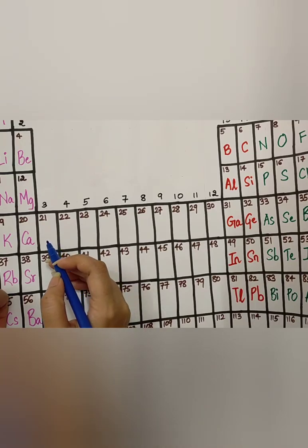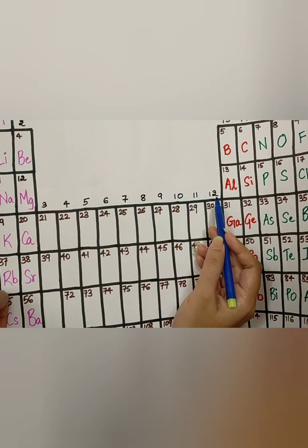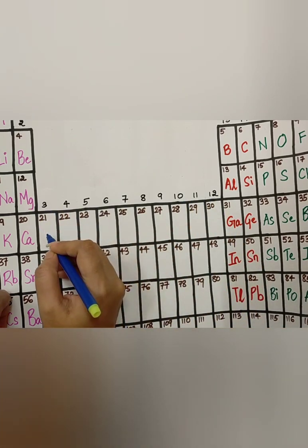Now, let us move to the 4th period, starting from Groups 3 to Group 12. For that, you have to know the mnemonic.